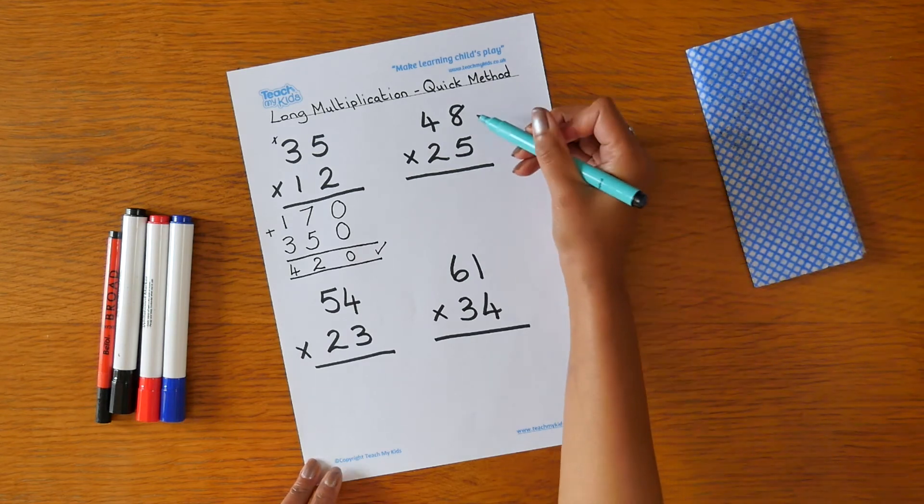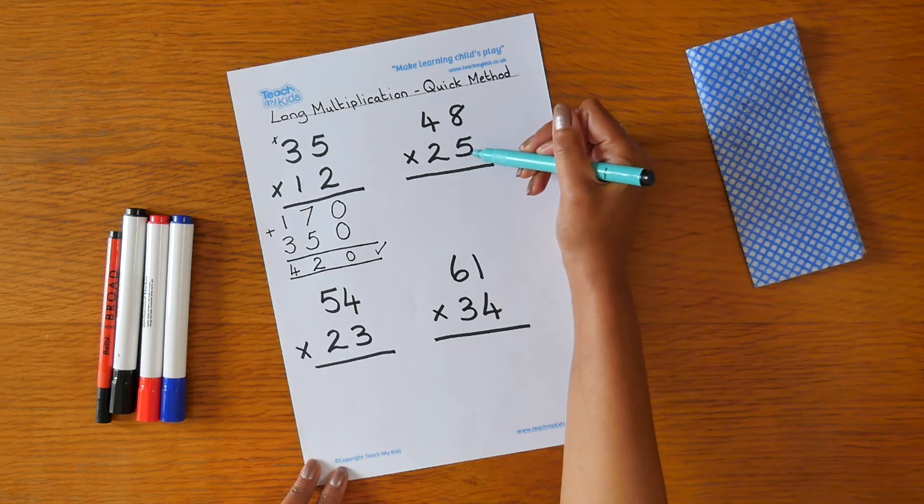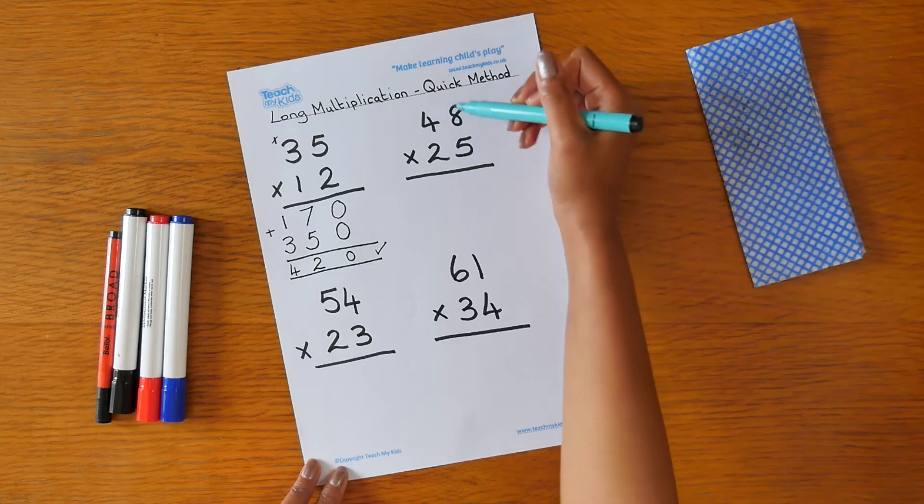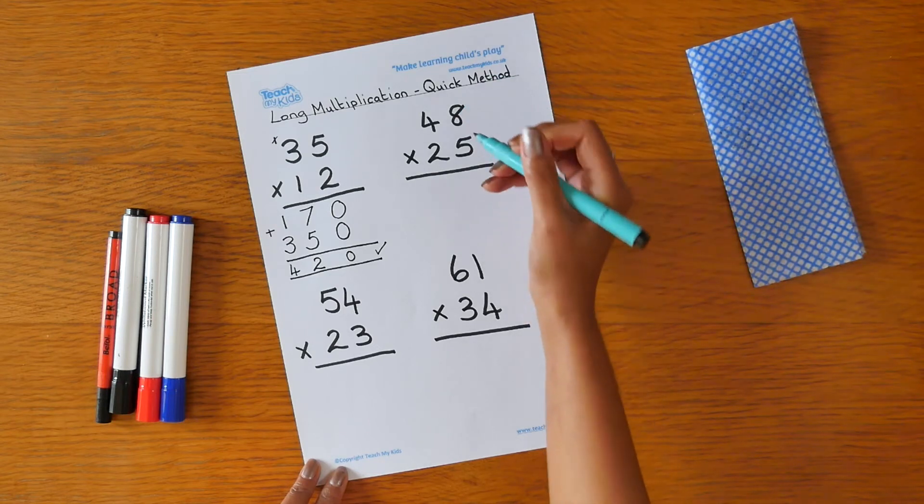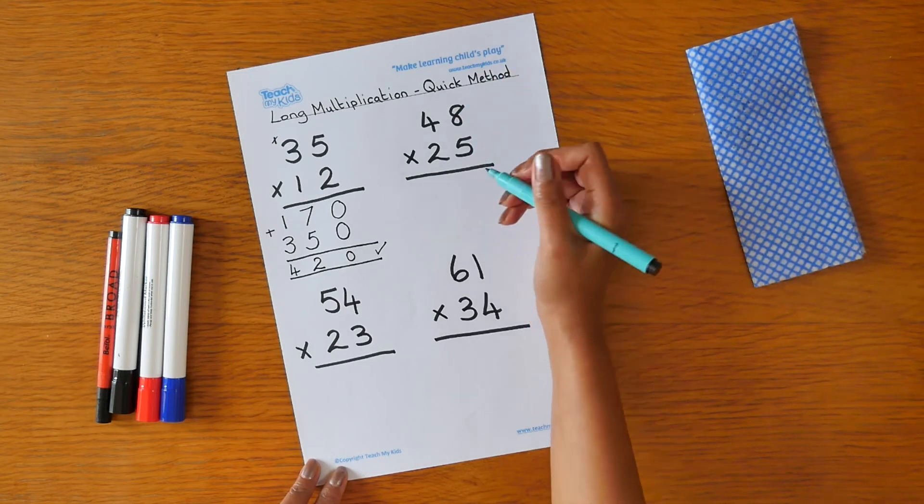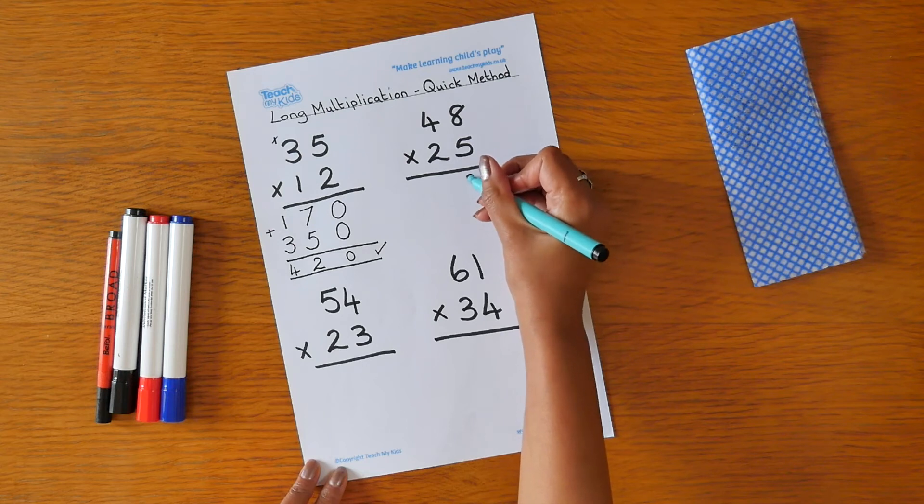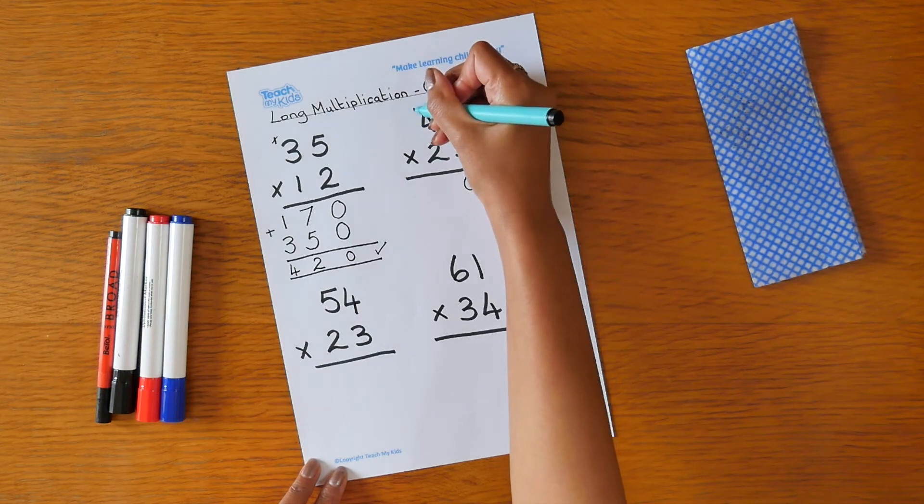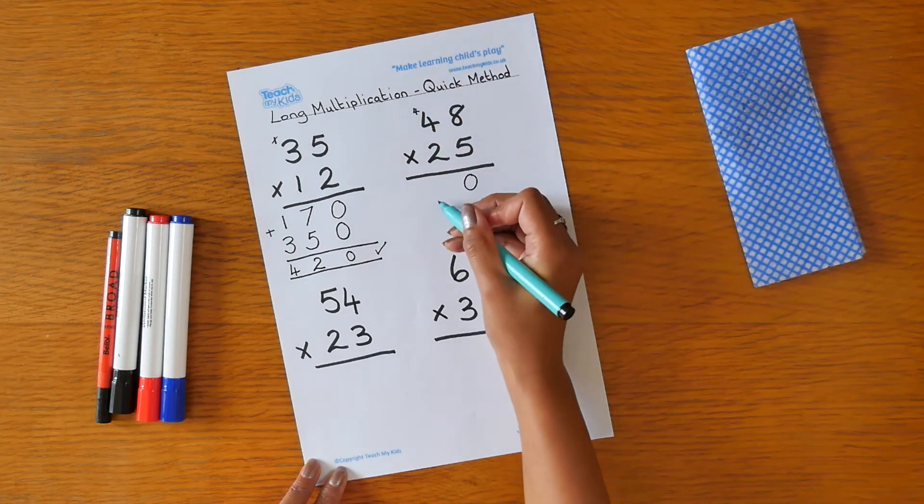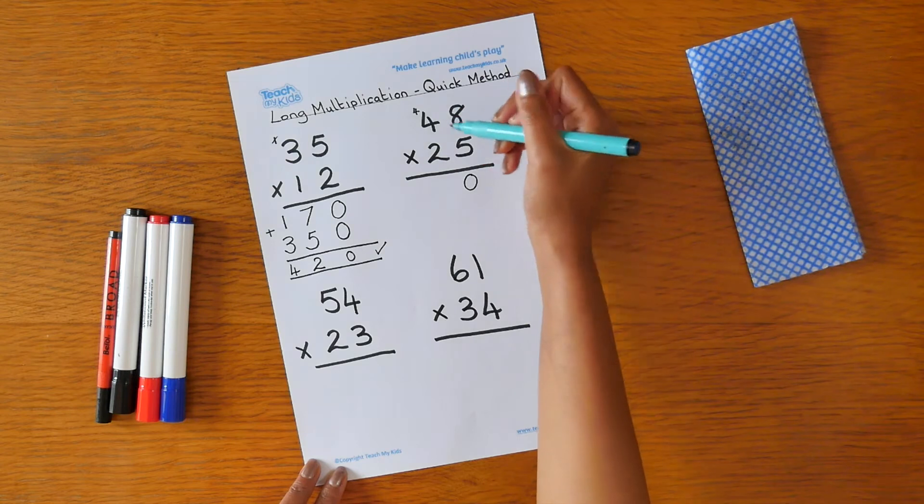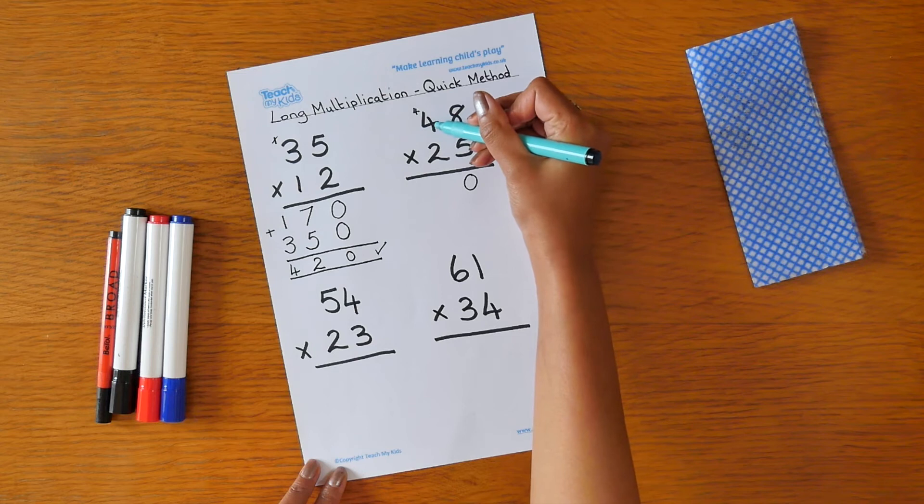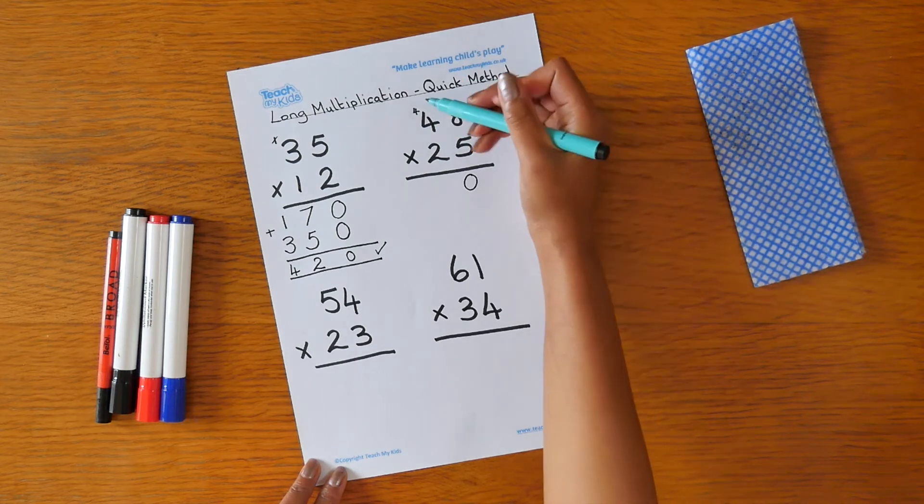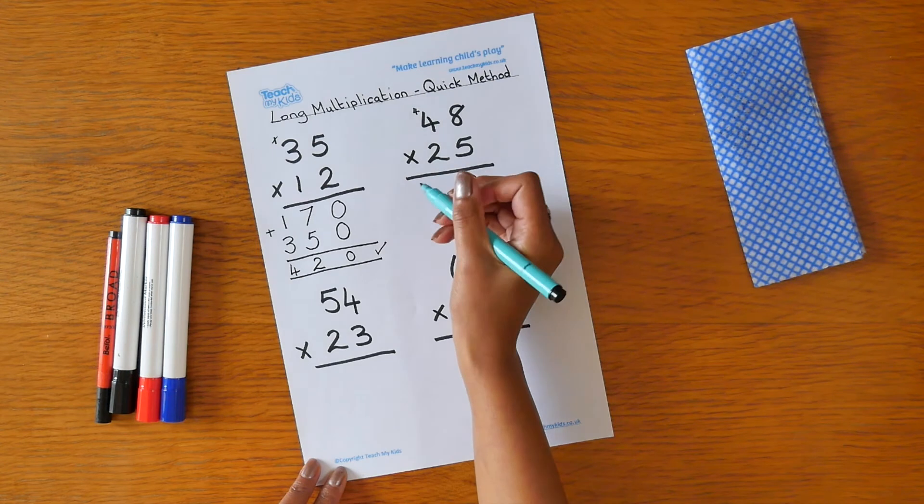Our next sum is 48 times 25. So we begin by multiplying the 5 by the 8. 5 times 8 is 40. So we place the 0 in the units column and we're going to carry the 4. You can place the 4 underneath if you wish to.